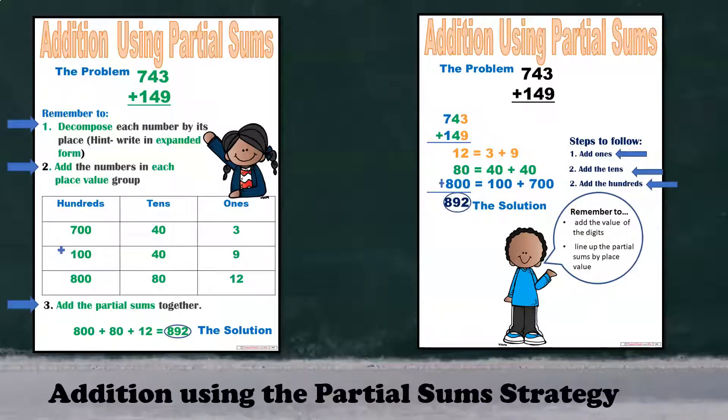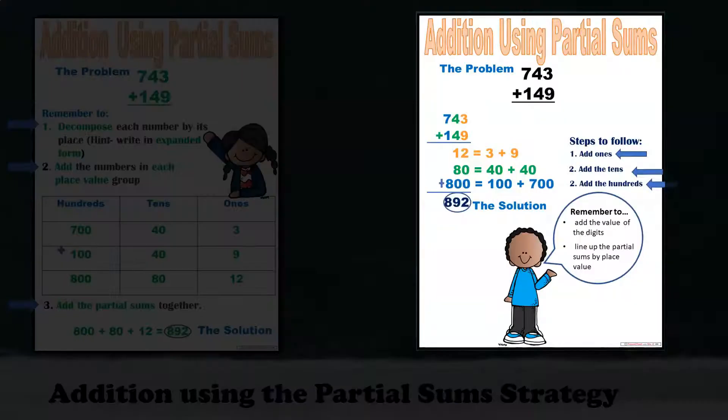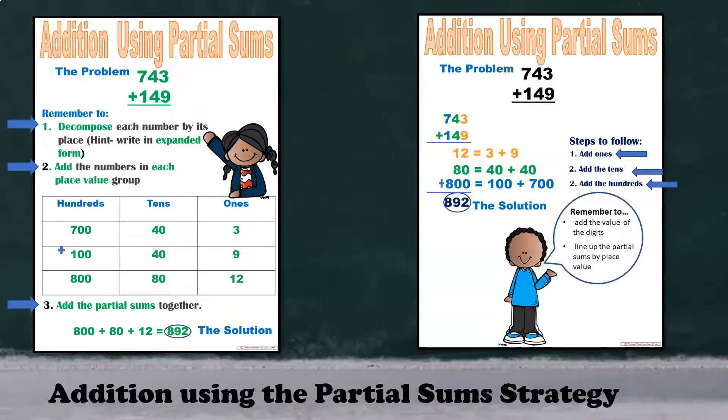Addition using the partial sum strategy can be done in different ways. Here's an example of two of them. Both require three simple steps in order to find the sum. To the left, the numbers are written out horizontally and grouped by place. Whereas the example on the right, partial sums are written vertically and then combined. I will model how to use both.